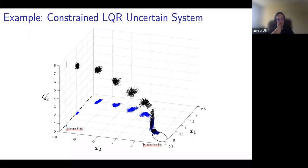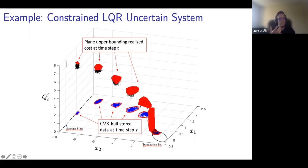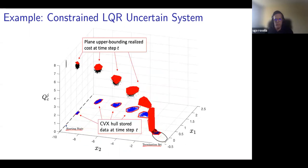Once we have the sets, we approximate the value function. For the data points, we compute the cost of the rollout — these black data points are a Monte Carlo estimate of our cost, summing the cost over the closed-loop data. With uncertainty, our cost estimate is noisy. To denoise, for each time t we compute a hyperplane that upper-bounds the realized cost — essentially denoising the data and approximating the worst-case cost at each time step. Given this approximation, we perform the barycentric approximation and convexify the domain as in the deterministic case.